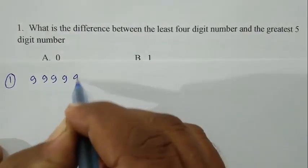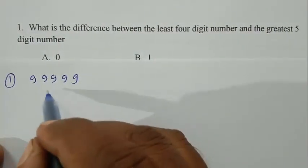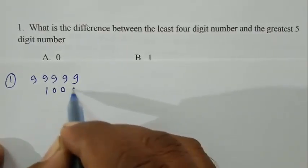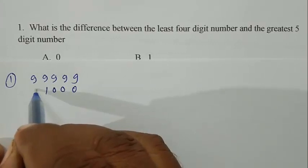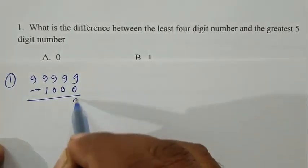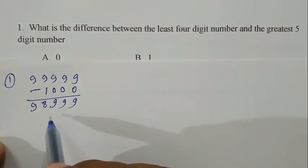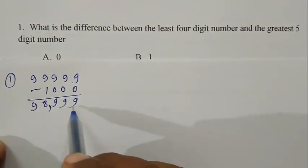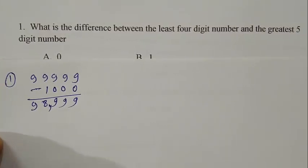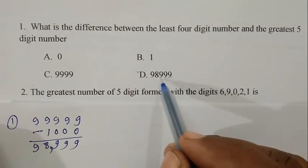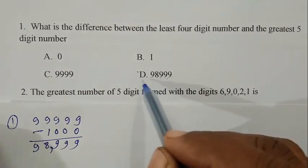So 1, 2, 3, 4, 5. That is the greatest 5-digit number, 99999. Then the least 4-digit number, 1000. The difference is 98,999. So 98,999 is the right answer.